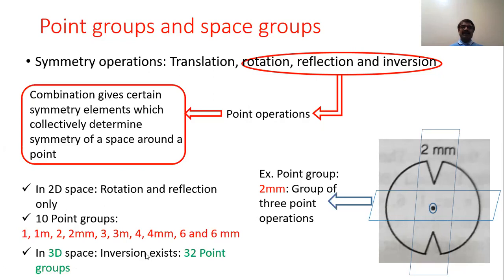In three-dimensional space, along with rotation and reflection, we have a third operation — inversion. The situation becomes more complicated, and in that case we have more point groups. So in three-dimensional space we have 32 point groups, while in two-dimensional we have 10 point groups.